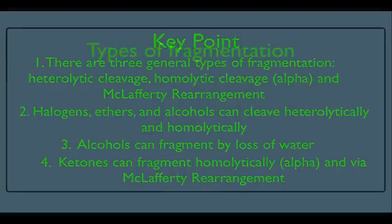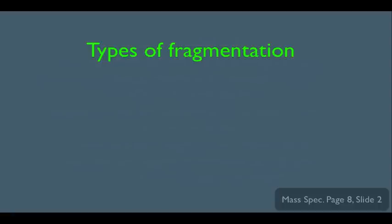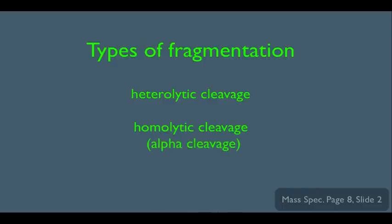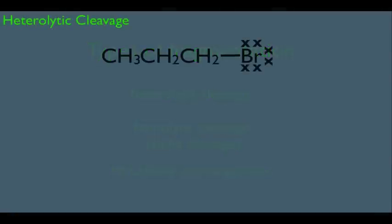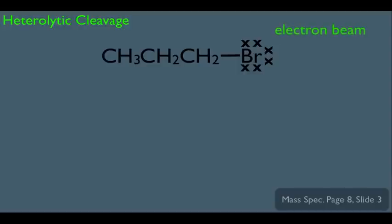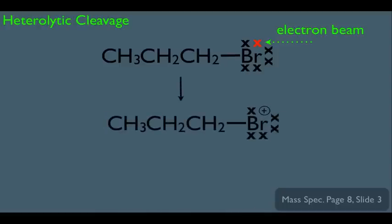We have different types of fragmentation: heterolytic, homolytic (also alpha cleavage), and McClafferty rearrangement. Looking at heterolytic cleavage first — we have an alkyl halide. When placed in the mass spec, the electron beam could dislodge an electron on the Br. If that happens, we end up with a radical cation species. If this is the only thing that happens, this species gives rise to the molecular ion peak.